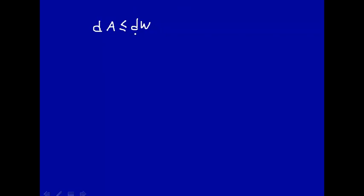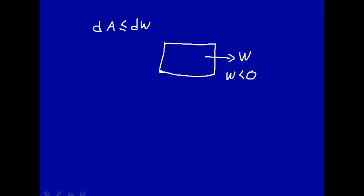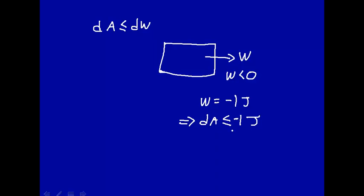Delta A is less than or equal to W. If we have a system doing work on the surroundings — which is what engineers like to consider, how much work you can get out — from our sign convention W is less than zero; it's a negative amount of work. The Helmholtz free energy will decrease, but it has to decrease either equal to or even more than the work done. For example, if the work done is minus one joule (that minus sign is because we're doing work on the surroundings), this implies that dA has to be less than or equal to minus one joule. In other words, the Helmholtz free energy has to decrease by more than one joule, or equal to one joule for a reversible process.